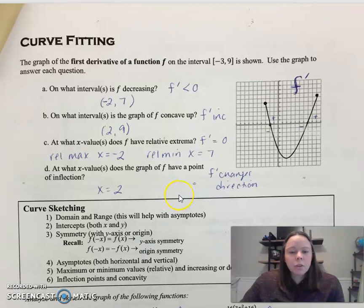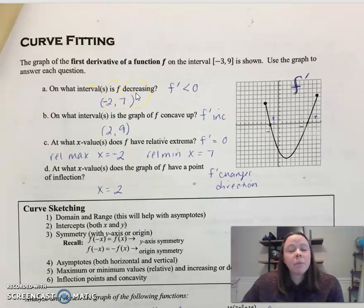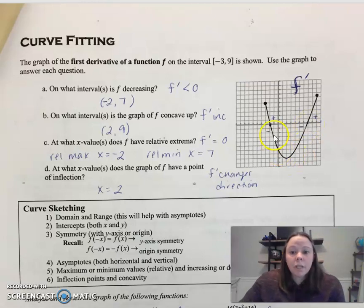I started off this first part with just a little review. This is the graph of a first derivative. Remember, label your graph so you know what you're looking at. We're going to answer some questions on the interval from negative three to nine. On what interval or intervals is the function decreasing? Immediately in your brain you need to think: when is the derivative negative? You can see all these values are negative — those represent the slopes of the tangent lines on the original function — so that's when the original function decreases.